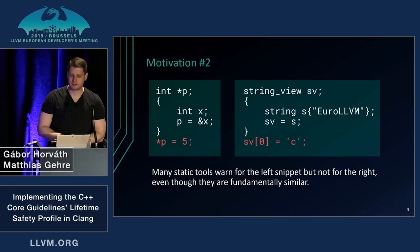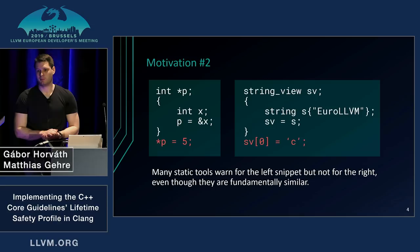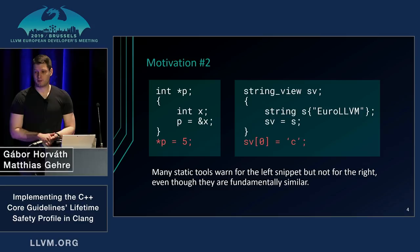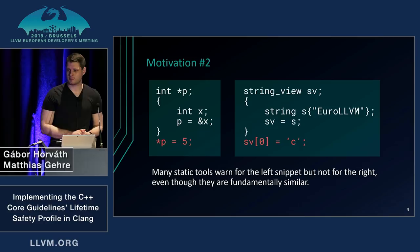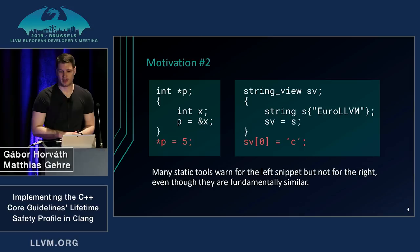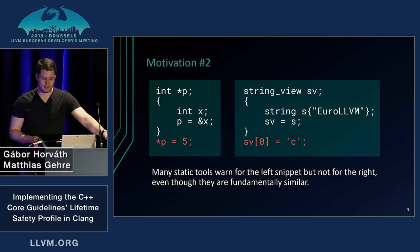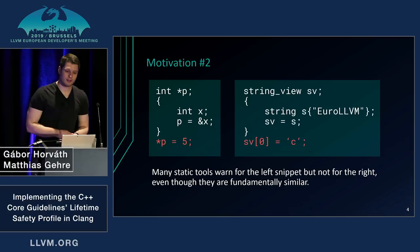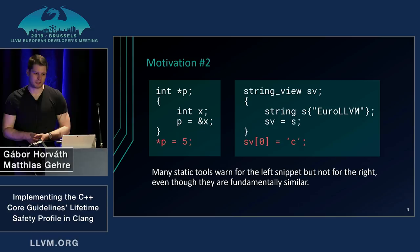Let's look at two code snippets. The one on the left has a pointer which will point to a local variable, and once this local variable goes out of scope, the pointer will dangle and we will dereference a dangling pointer. We have a lot of static analysis tools that will be able to catch such problems. If we look at the code snippet on the right, we will have a string_view referring to a local std::string object that will go out of scope, and we will have a dangling string_view with undefined behavior. While these two code snippets are fundamentally similar, a lot of tools are not able to catch the code on the right unless it is annotated or the tool has explicit knowledge about these types.